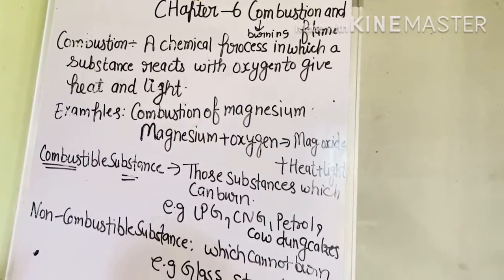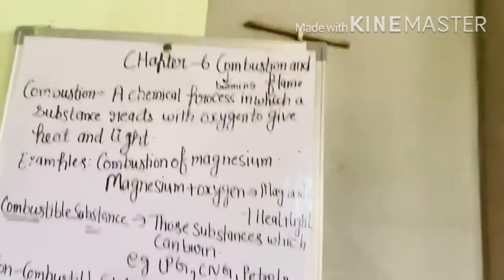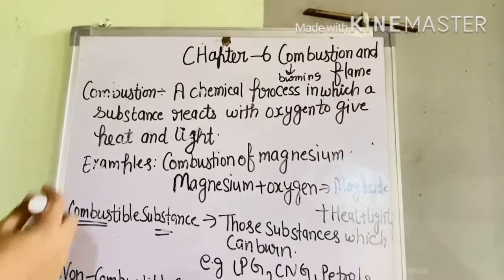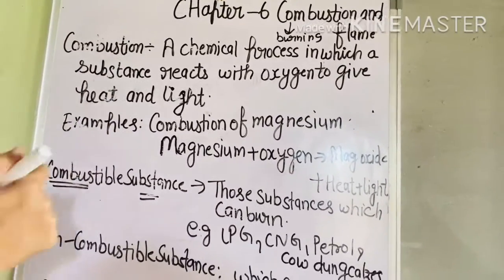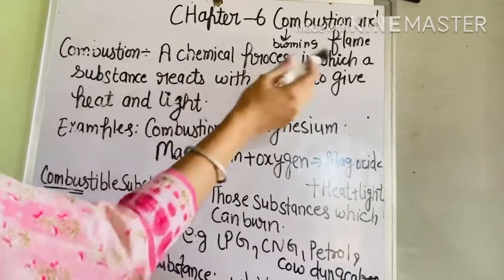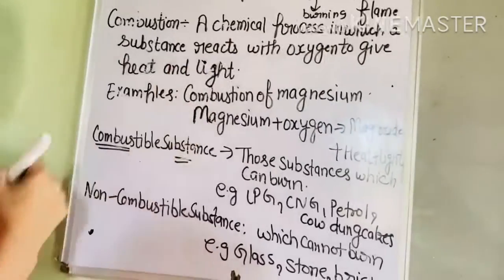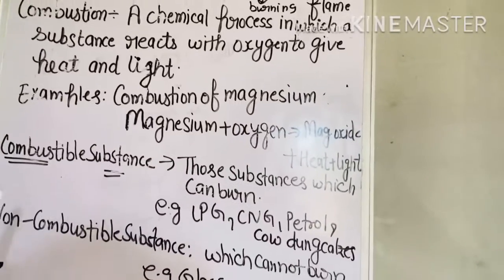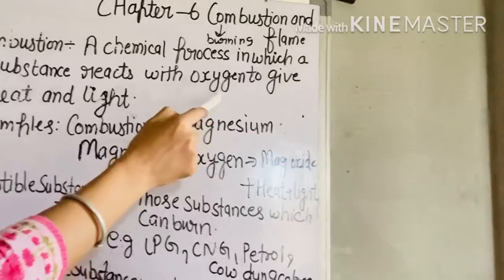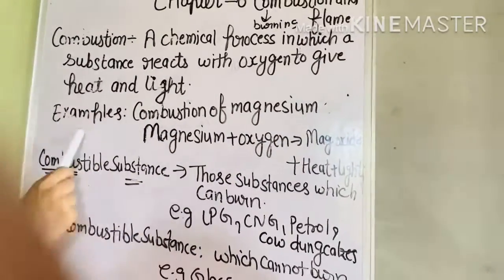Let's read the definition of combustion. Combustion is a chemical process in which a substance reacts with oxygen to give heat and light.